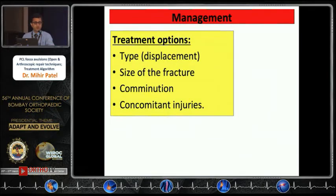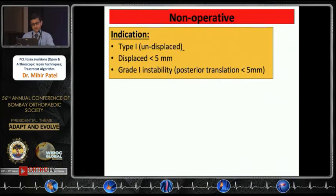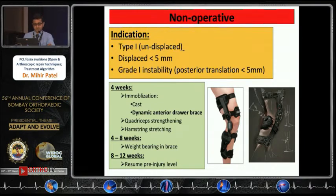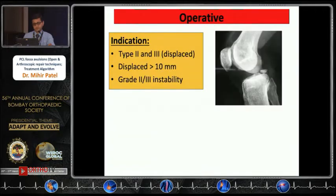Non-operative treatment is indicated for Type 1 or undisplaced fractures, or displacement less than 5 millimeters with no instability or only grade 1 posterior instability. The basic principle is to prevent posterior sag of the tibia: place the patient in a dynamic anterior drawer brace, start active quadriceps strengthening and passive hamstring stretching. By 4 to 8 weeks, start weight bearing in the brace, and by 8 to 12 weeks they can resume pre-injury activities.